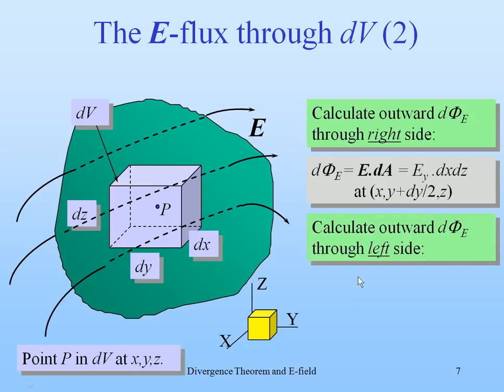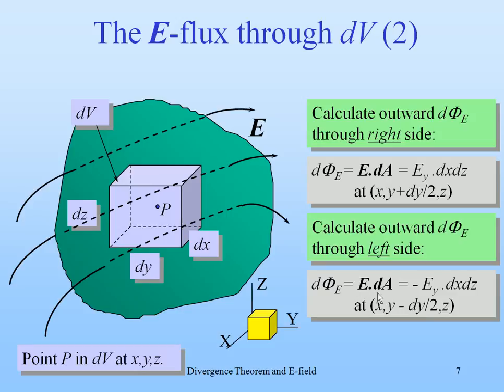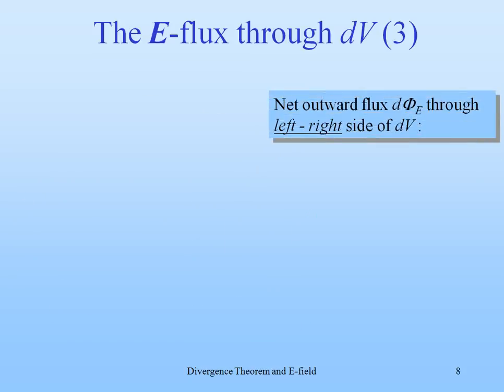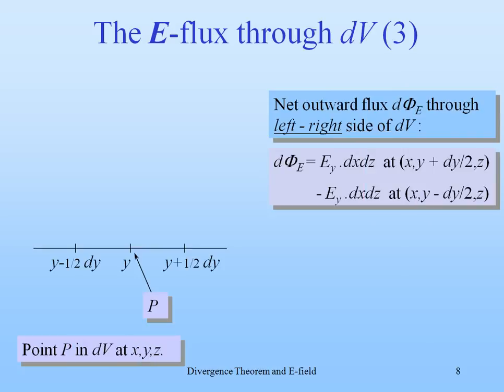The left side is similar, but then with ey at minus dy over 2. And together, we have the net outward flux through the left-right side of dV is the right side minus the left side.